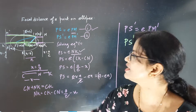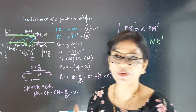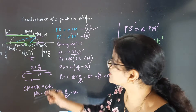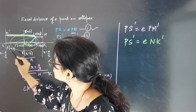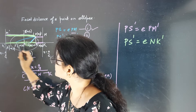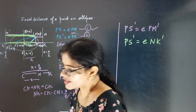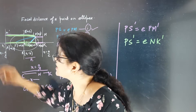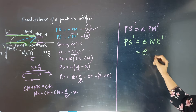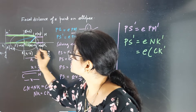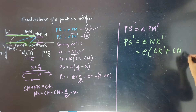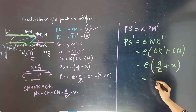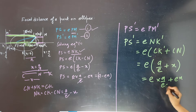To find NK dash: NK dash equals CK dash plus CN. CK dash is a by e and CN is x, so NK dash = a/e plus x. Multiplying through by e gives a plus ex.